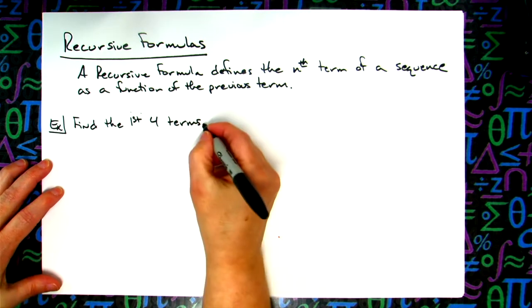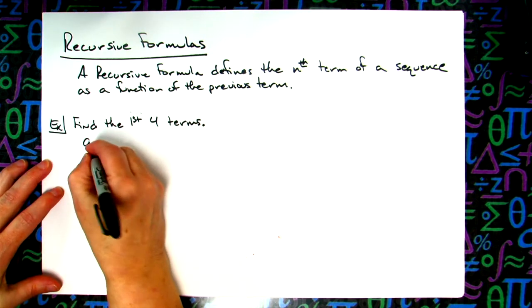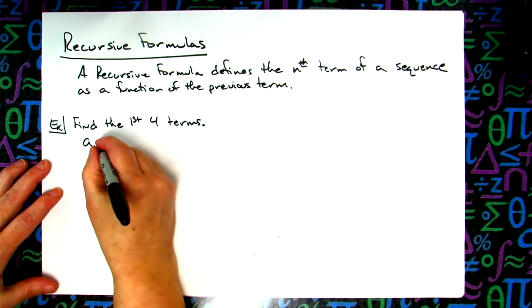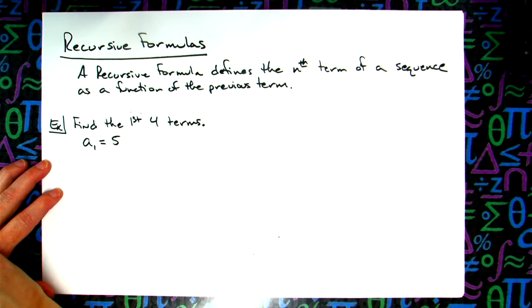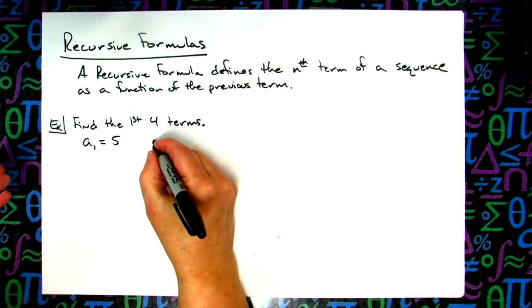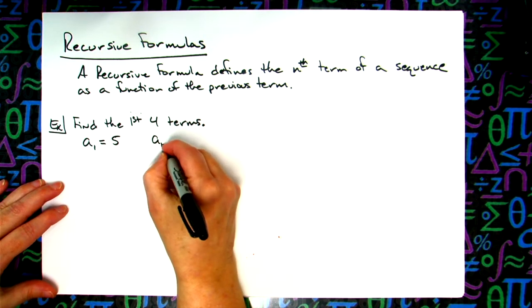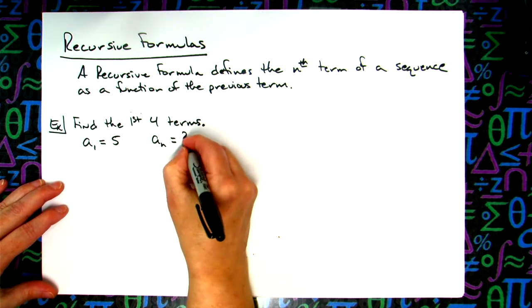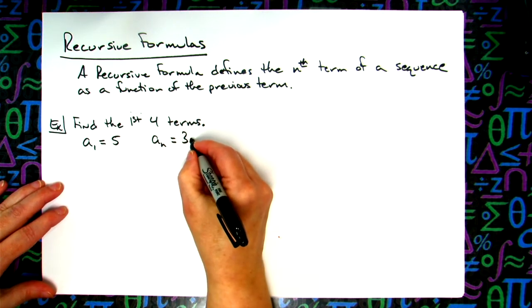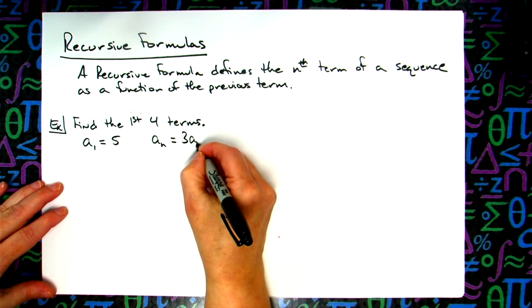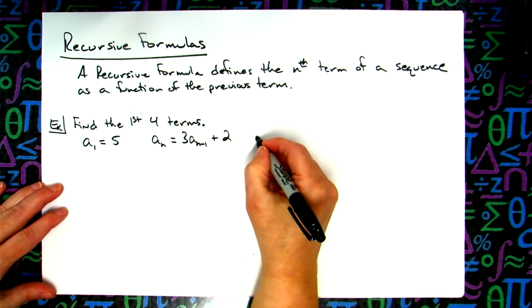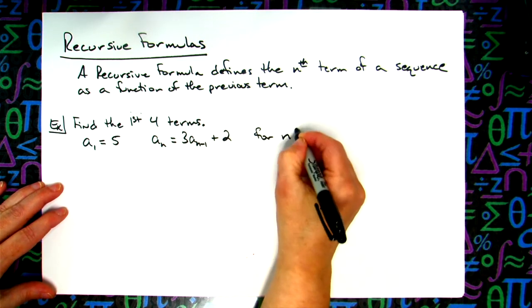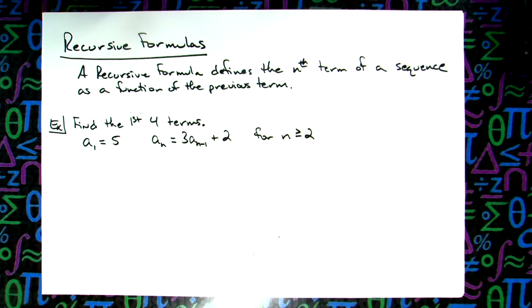And I'm going to give you the first term, or a sub 1, which is going to be our first term of 5. And then the formula, the recursive formula for generating this, is going to be a sub n equals—now watch how I do this notation—a sub n minus 1 plus 2.